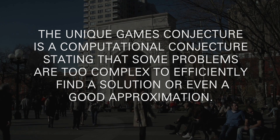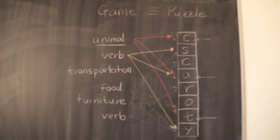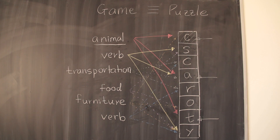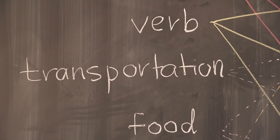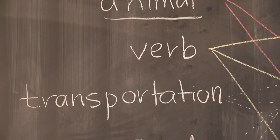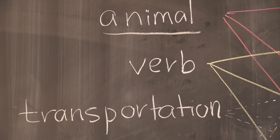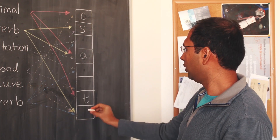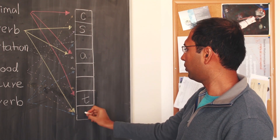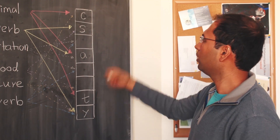I will describe the kind of games that I like to play by giving a toy example. This is really a puzzle constructed by my collaborator Dana Moskovis. On the left-hand side, you have categories such as animals, verbs, transportations and so on. On the right-hand side, you have a column of boxes and you want to fill up these boxes with letters. So you have to pick up these words for different categories.